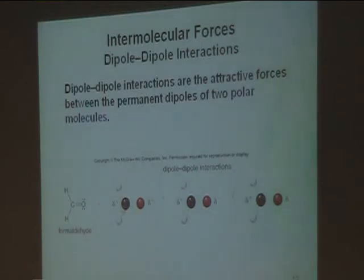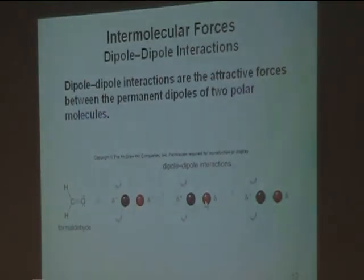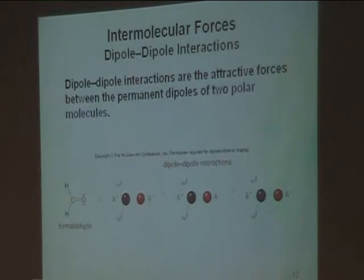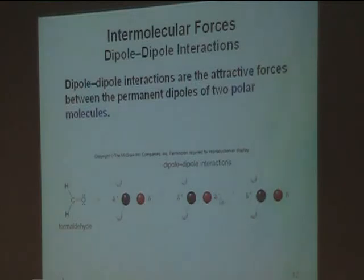Here is dipole-dipole interaction. A dipole-dipole interaction exists between the permanent dipoles of two molecules. For example, take formaldehyde (CHO): one CHO molecule and another — it is an attraction between two of the same molecules. For dipole-dipole interaction, focus on orientation: the oxygen end has to be connected with the carbon end, because oxygen has a partial negative charge and carbon has a partial positive charge relative to oxygen. That is the dipole-dipole interaction.